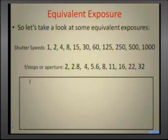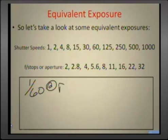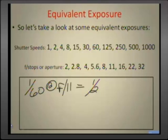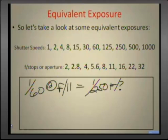For an example, let's say that we have 1/60th of a second at f11. And I want to go now to 1/250th of a second. Then what will my f-number have to be? What is the f-stop going to be if I go from a 60th to a 250th of a second?